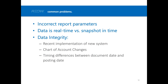Now we're going to talk about common problems when extracting data, as well as data integrity. The first is incorrect report parameters. Many times you need to print two different reports — for example, an income statement and its supporting details — and those should match. When comparing apples to apples, make sure both reports use the same date range. You may also need to reconcile your accounts payable detail to your general ledger account, again using the same parameters and date range.